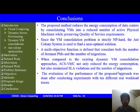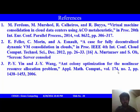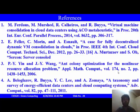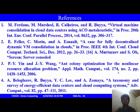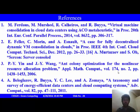The references are: first, 'Virtual Machine Consolidation in Cloud Data Centers using ACO Meta-Heuristic' by M. Farahnakian, M. Ashraf, Pahikkala, and Buyya; second, 'A Case for Decentralized Dynamic VM Consolidation in Cloud' by E. Feller, C. Morin, and A. Esnault; third, 'Ant Colony Optimization for the Nonlinear Resource Allocation Problem' by P. Y. Yin and J. Y. Wang; and lastly, 'A Taxonomy and Survey of Energy-Efficient Data Centers and Cloud Computing Systems' by A. Beloglazov, R. Buyya, Y. C. Lee, and A. Zomaya.